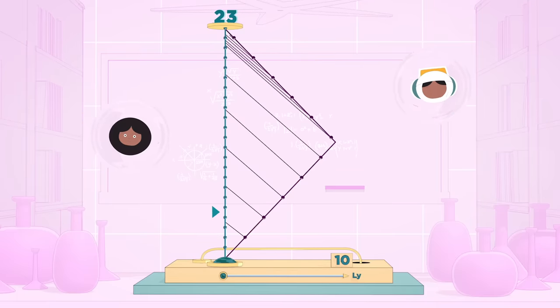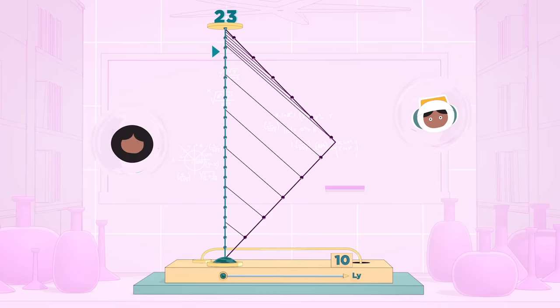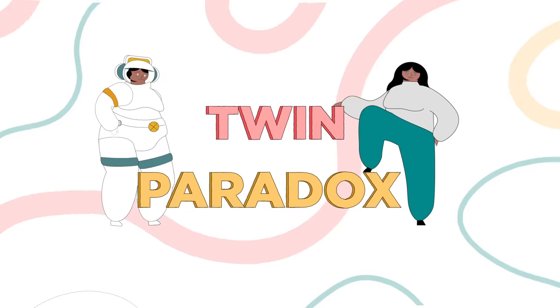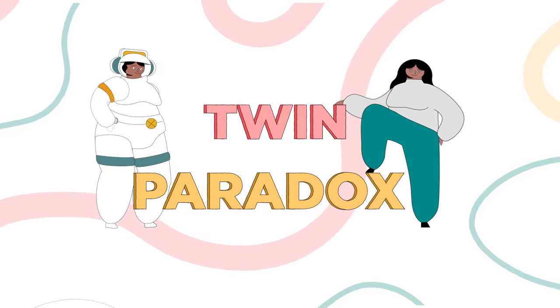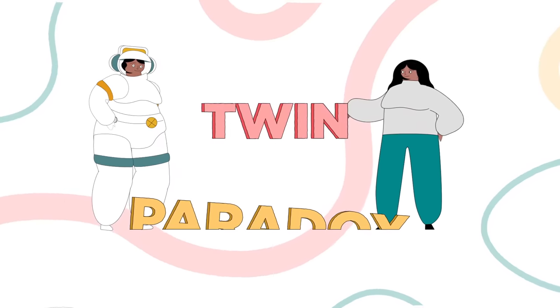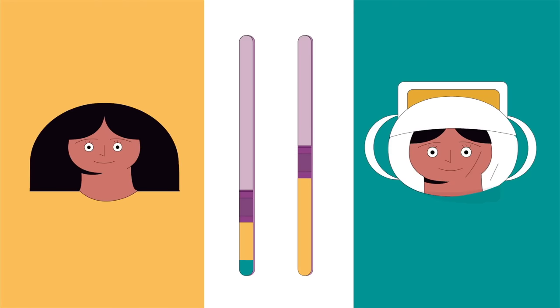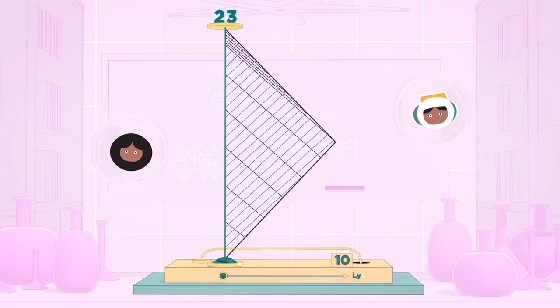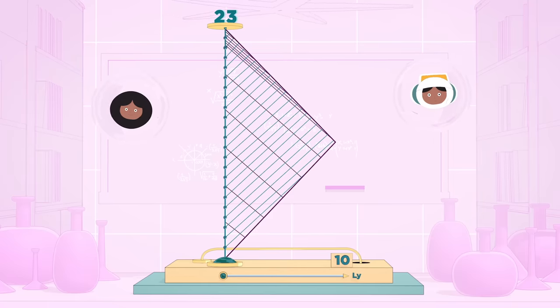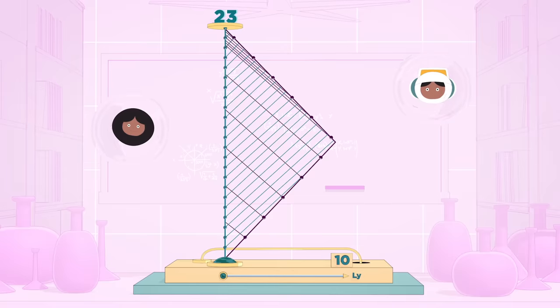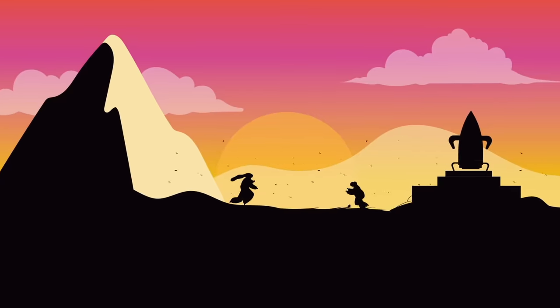Thus, Terra observes Stella aging slowly for about 90% of their 23 years apart, and aging rapidly during the last 10%. This asymmetry accounts for why the paradox isn't really a paradox. Although each twin witnesses time both speeding up and slowing down for the other, Stella sees an even split, while Terra sees Stella aging slowly for most of the time they're apart. This is consistent with each twin's measurement of the space voyage, which takes 23 Earth years, but only 11.5 as experienced aboard the ship.